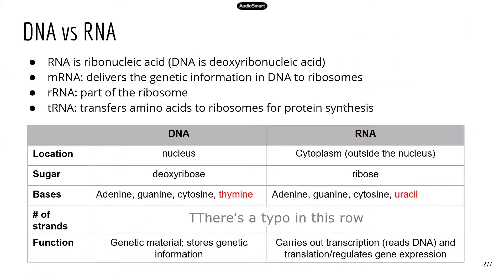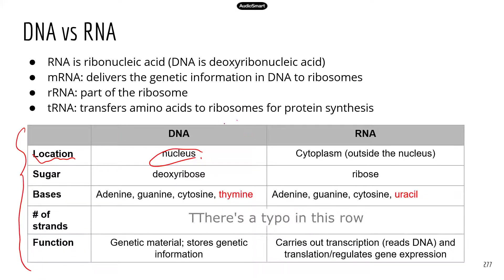Now let's look at the differences between DNA and RNA. I've made a table listing the major differences, including location. DNA can only be found in the nucleus — you may find DNA in mitochondria as well, but for simplicity we'll say DNA is normally found in the nucleus. DNA molecules are too big to exit through the nuclear pores in the nuclear membrane.